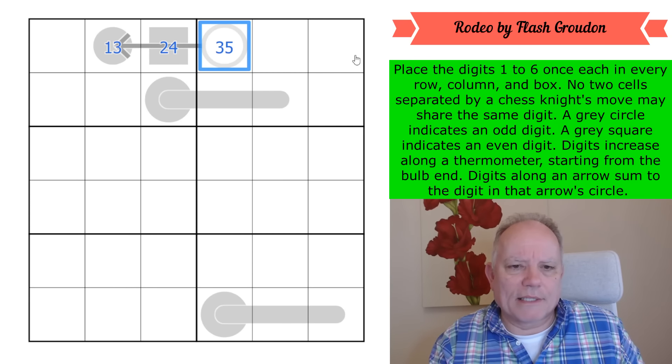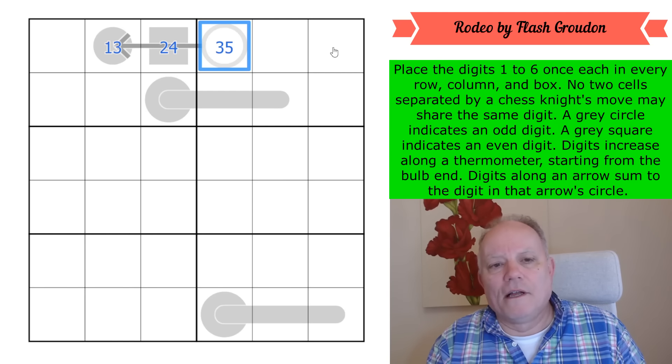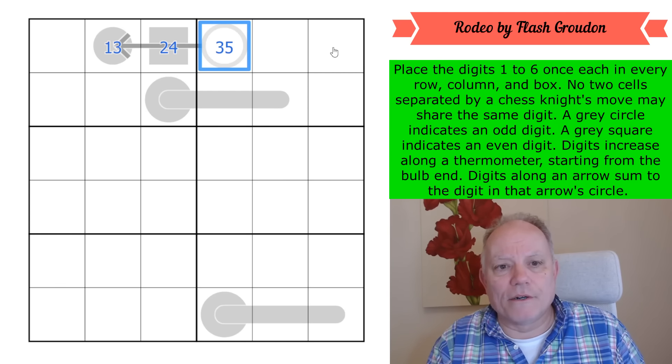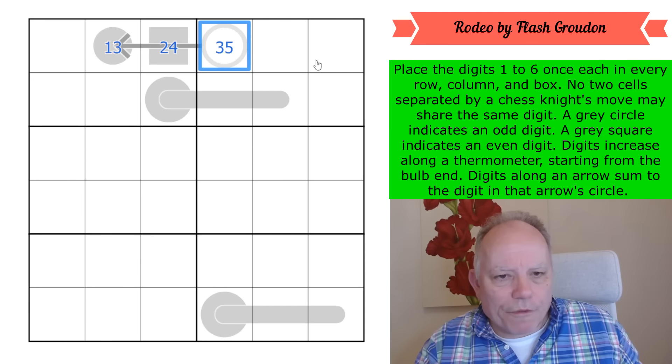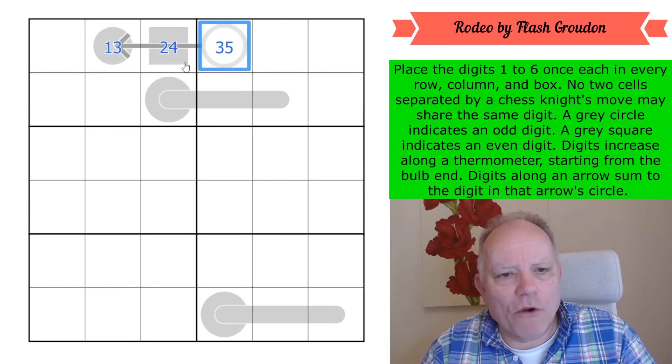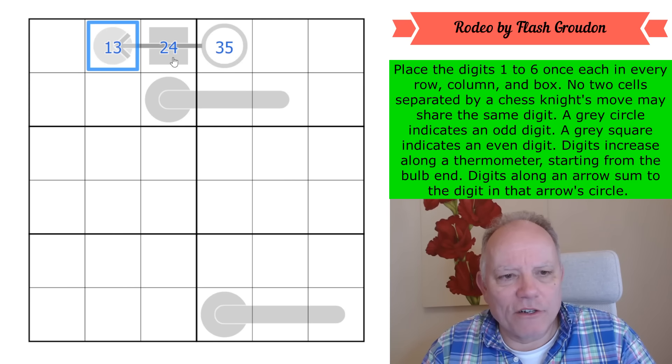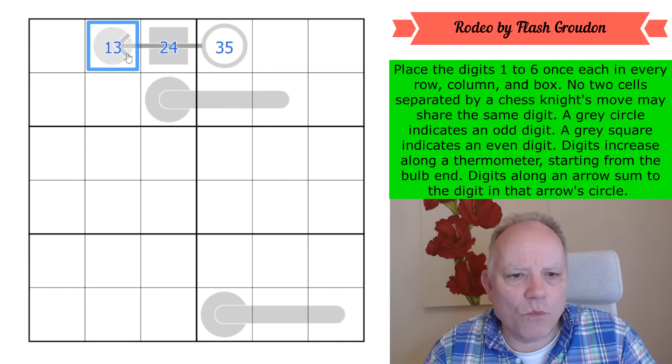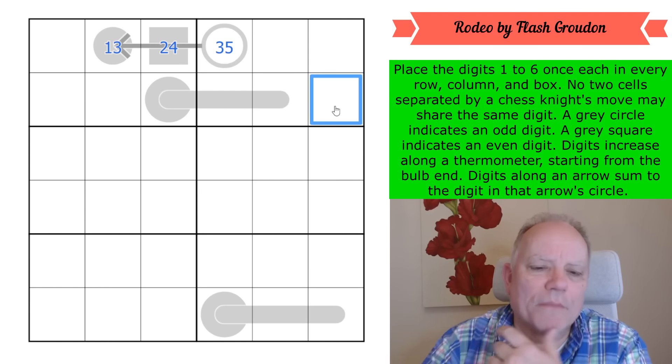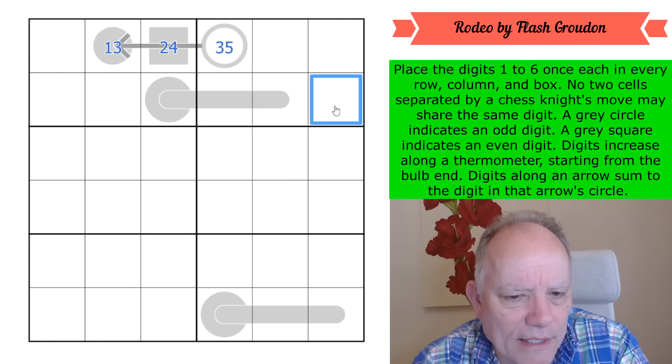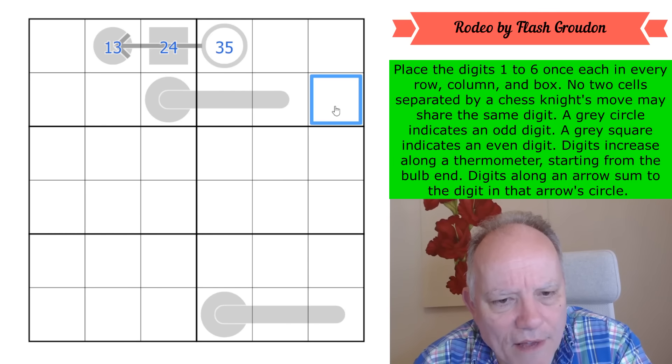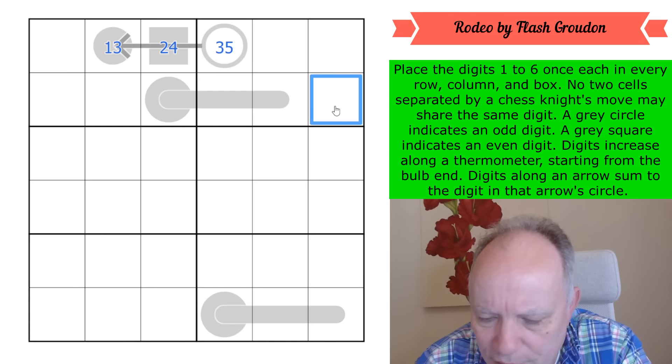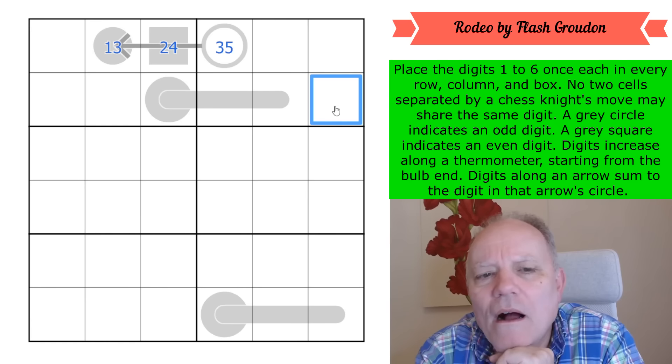They're adding to three or five. This circle is effectively, funnily enough, a gray circle in the sense that it must be an odd digit - that's not by the rules though, that's because it's adding an odd and an even. Now what is that telling us about the thermo? If that was a one, the one in this box would be there.